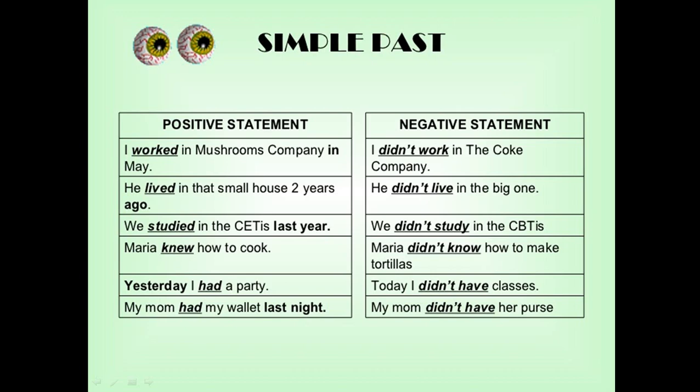Today I didn't have classes — look at the positive form: 'had.' In negative sentences the verb doesn't change. My mom didn't have her purse. Positive statements use the past form: regular verbs take -ed, irregular verbs use their second form — 'knew' is the past of 'know,' 'had' is the past of 'have.' In negative statements the main verb doesn't change after 'didn't.' Bunu unutmayın — ancak positive statements'ta fiilin ikinci hali kullanılır.